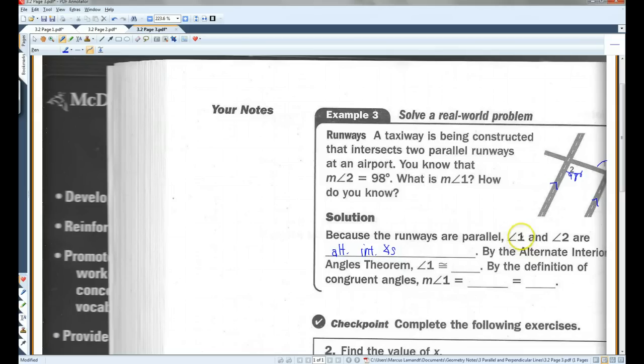Alternate interior angles. So, because the runways are parallel, angle 1 and 2 are alternate interior angles. By the alternate interior angles theorem, angle 1 is congruent to angle 2. By the definition of congruent angles, measure of angle 1 equals the measure of angle 2, which is 98 degrees.